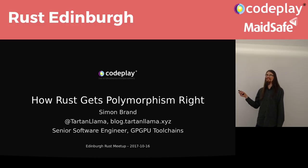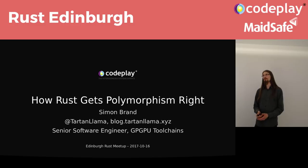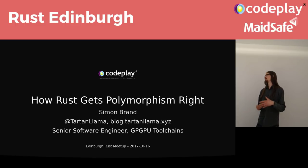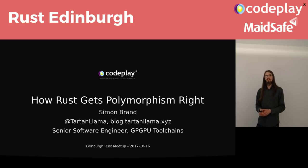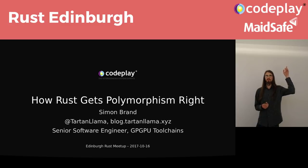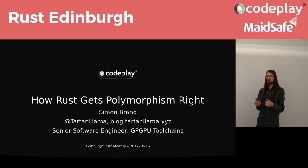My talk today is on how Rust gets polymorphism right. I'm going to be mostly comparing to C++ because that's what I know and that's what a lot of Rust's user base knows as well. People come to Rust from C++ a lot of times. Can you put your hand up if you do not know C++? One hand - so pretty much everyone knows C++. That's what I was hoping for.